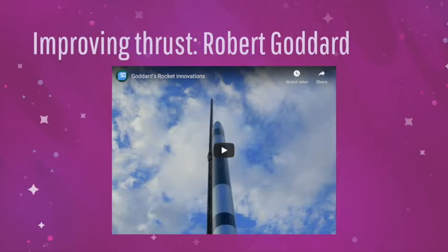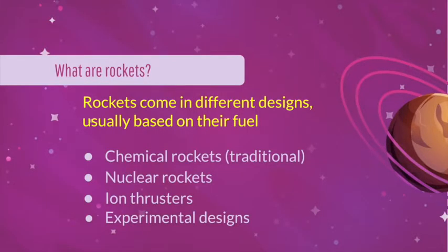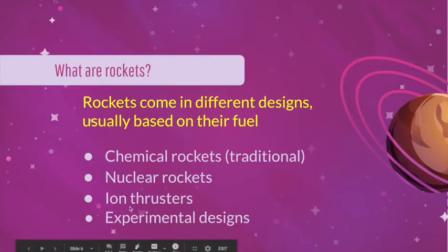It's important to understand the difference between a solid rocket engine and a liquid rocket engine. We have different kinds of rockets that come in different designs, and oftentimes that's based on the fuel they use. Most rockets that you're familiar with are chemical rockets. There are also nuclear rockets, although nuclear rockets have not been used to launch any vehicles into space. Ion thrusters have been used as well, and we'll discuss a few experimental designs over the course of this unit.